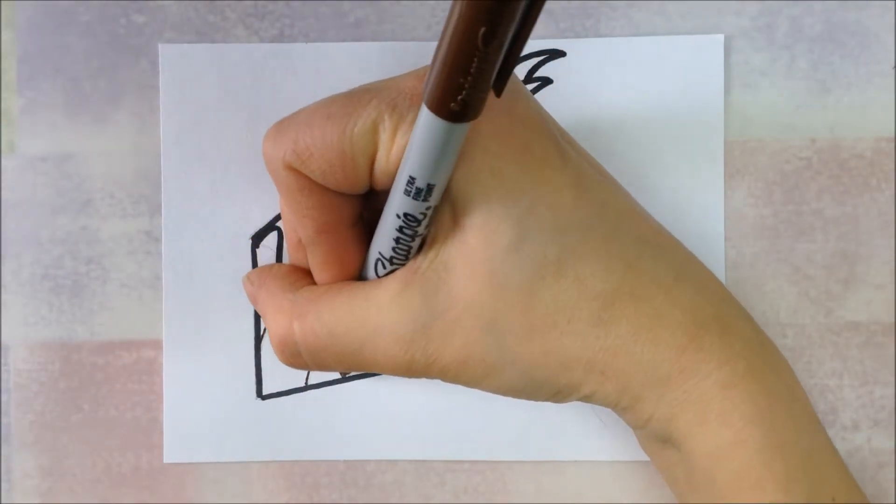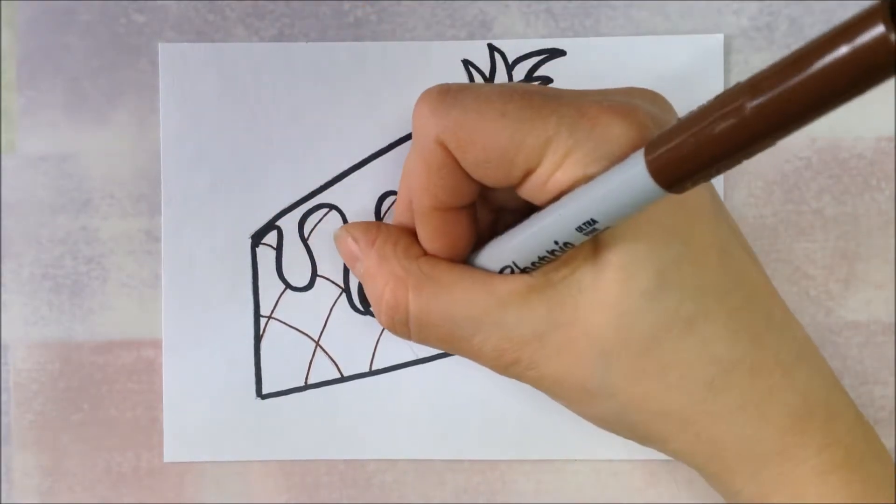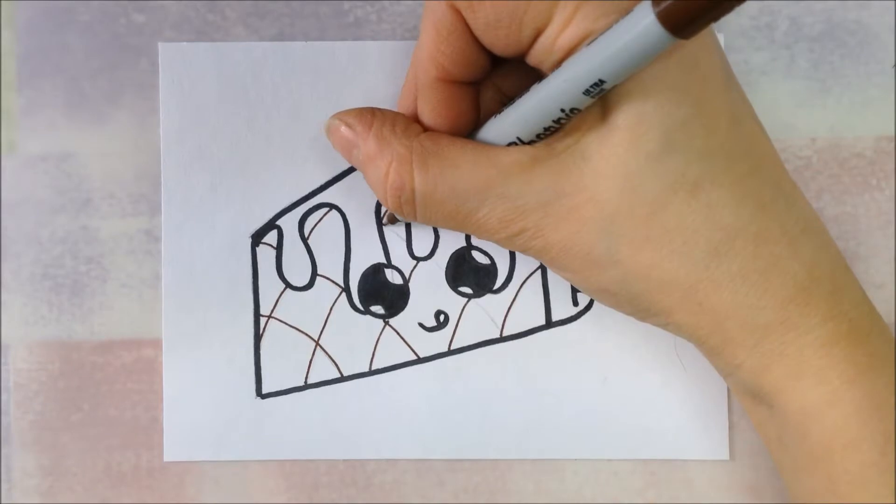And make sure it is permanent. Don't try to use a regular brown because when you color the yellow over it, it'll start smearing.